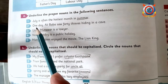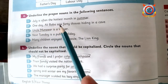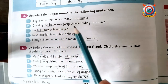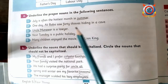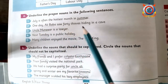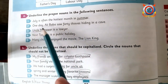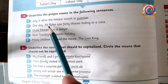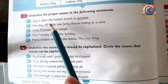Next sentence: 'One day Ali Baba saw 40 thieves hiding in a cave.' Here Ali Baba is a proper noun, so it should be underlined.